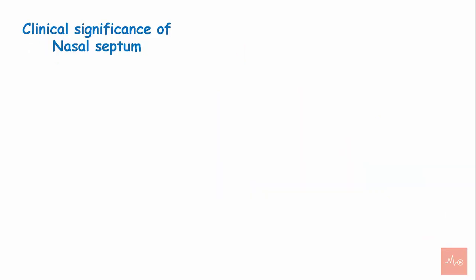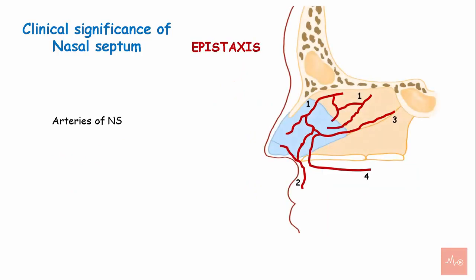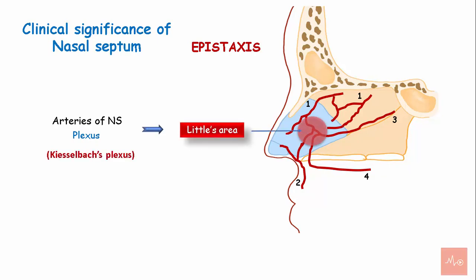Clinical significance of the nasal septum. Epistaxis refers to acute bleeding from the nose. The arteries supplying the nasal septum form a plexus at the anterior inferior part of the septum called the Kiesselbach plexus, and this area is called Little's area. This area is prone to bleeding, especially in kids and young adults, due to finger trauma.